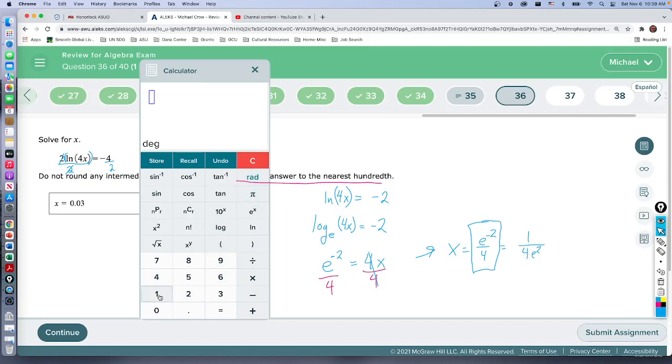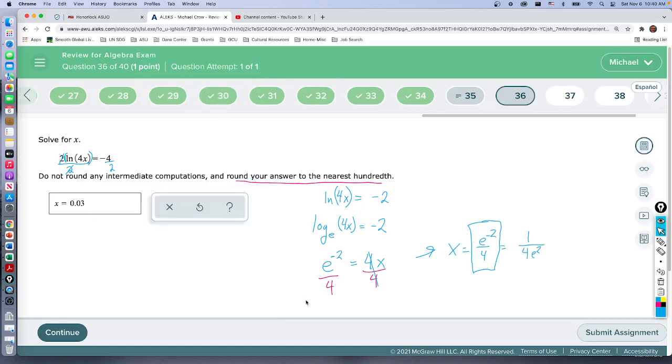So we're going to do one divided by four e to the positive two. We got that exact same answer, so either way, whichever feels more comfortable for you, this is our answer.